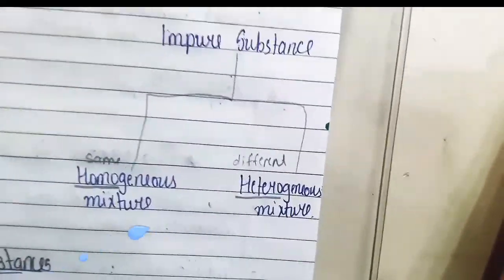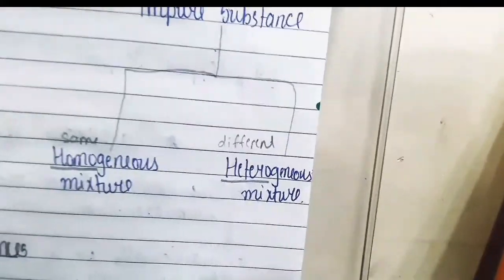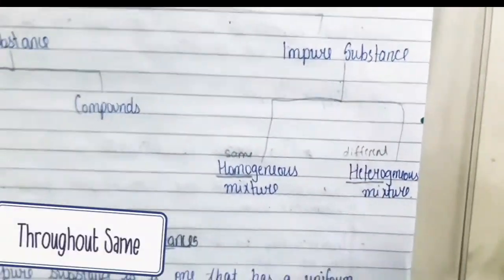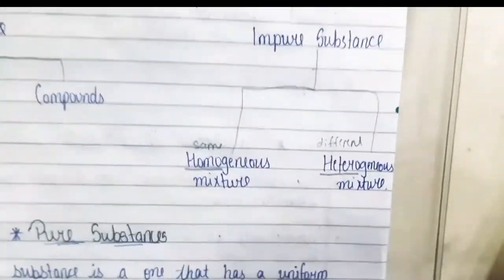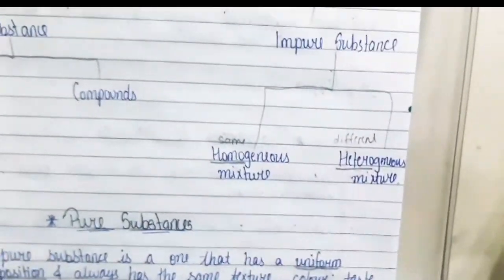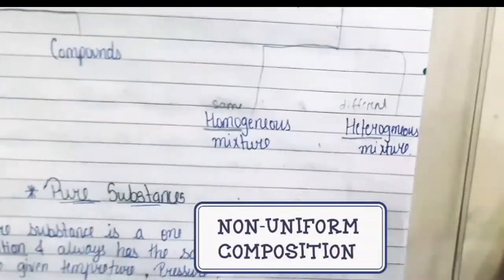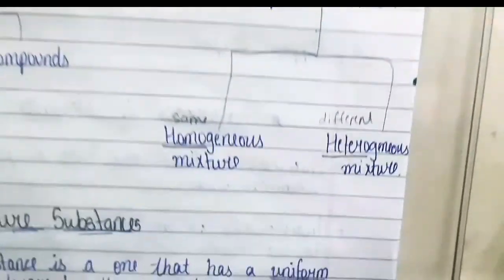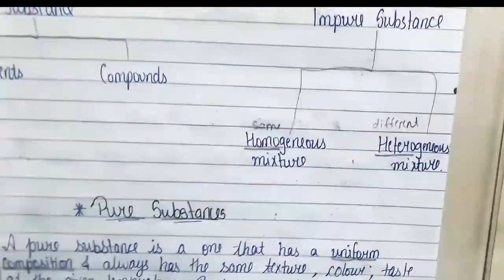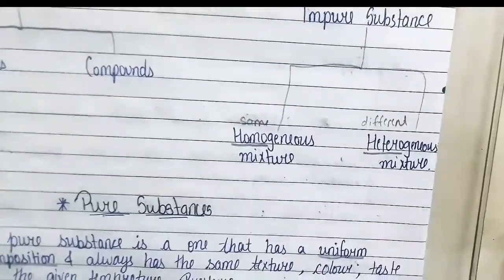Homogeneous means the composition is the same throughout. In heterogeneous, the composition is different. You need to remember these points very clearly: in homogeneous, composition is same and constant; in heterogeneous, the composition is not same — it is different.